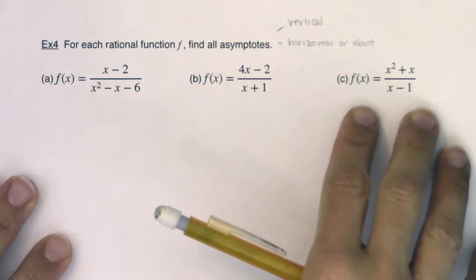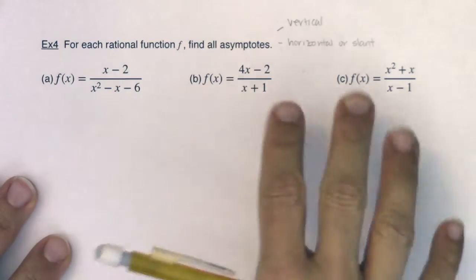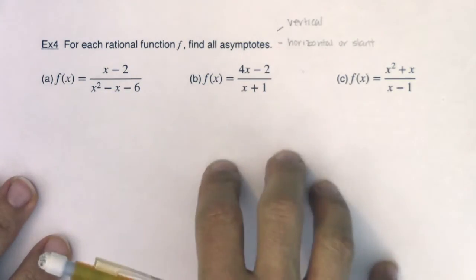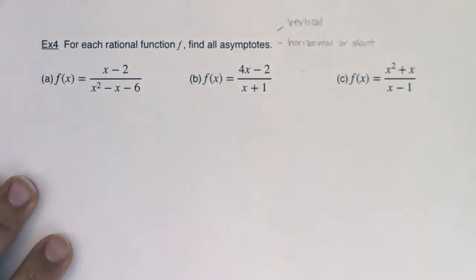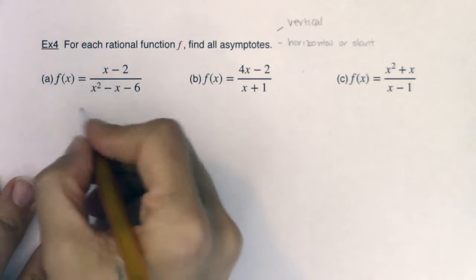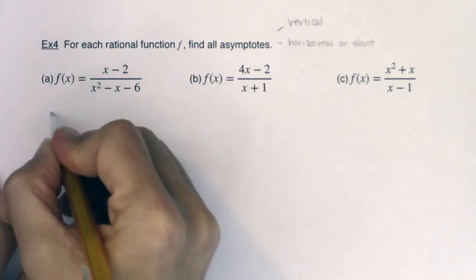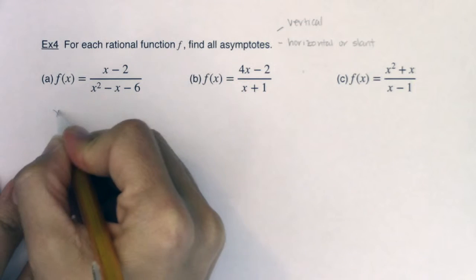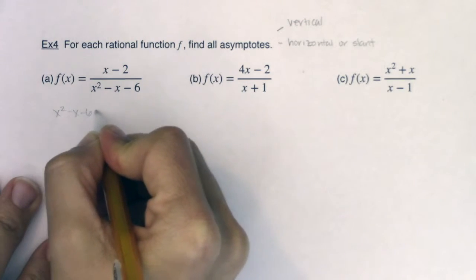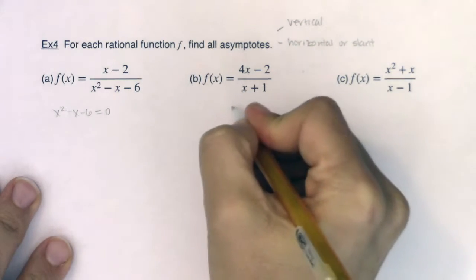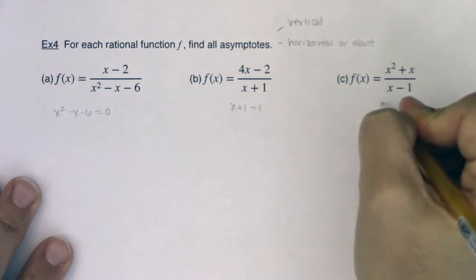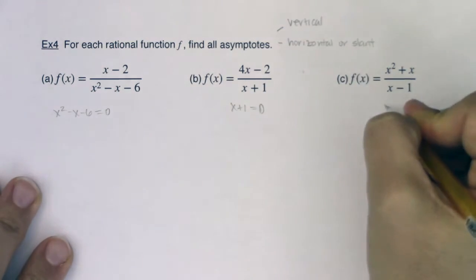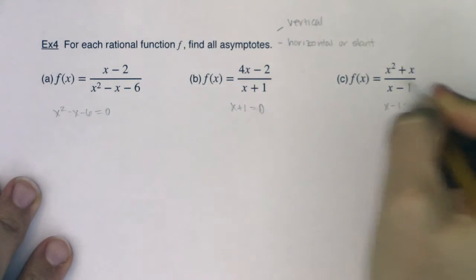Now before you start any problem, figure out the domain first. So if I want to look at the domain, I'm going to set each of my denominators to zero. I'm going to set x squared minus x minus six equal to zero, x plus one equal to zero, and x minus one equal to zero.